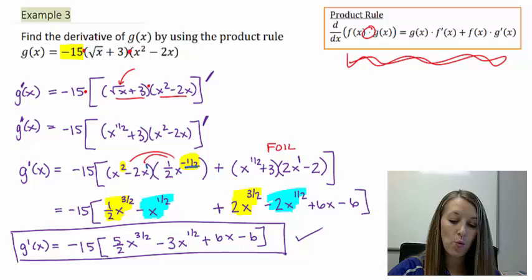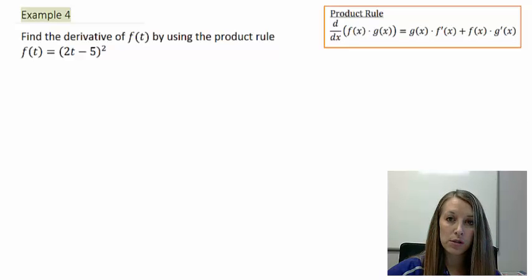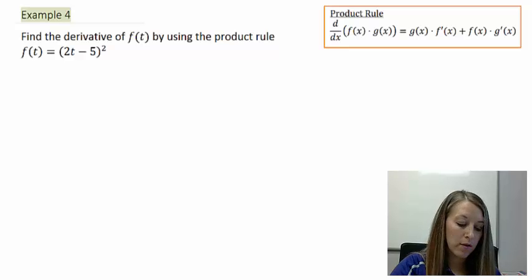Let's go ahead and do one more example. We have to find the derivative of f(t), which is equal to 2t minus 5 quantity squared, by again using the product rule. So I'm forcing you to use this rule so you understand how it works. Now, the problem with it in this problem is it doesn't look like a product.